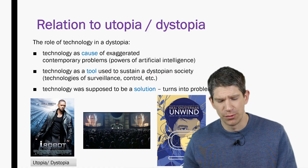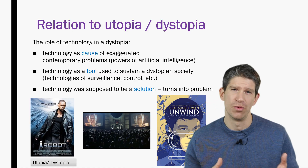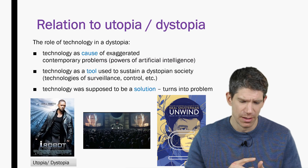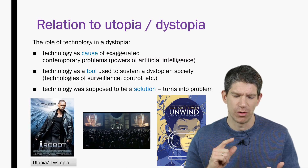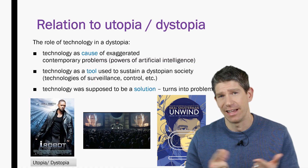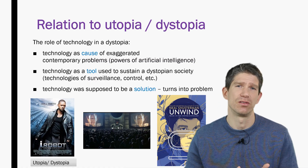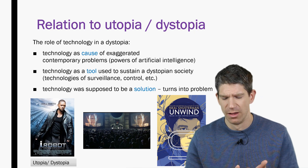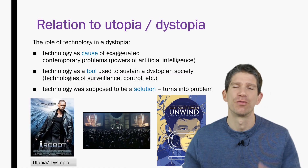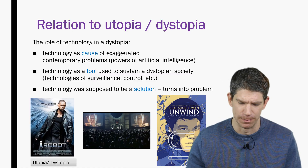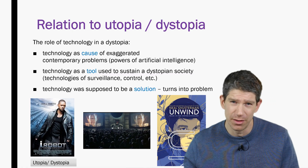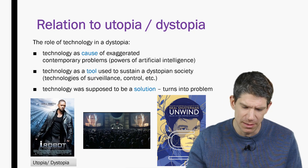This slide shows the role of technology in dystopias. Technology can be the cause of a problem. It can also be a tool that a government uses to stay in control, like in 1984. Or it can look like a solution — for example in Unwind, where it appears to be a solution to health problems but ends up being a dystopia still. That's what I want to highlight about the relation to the utopia and dystopia topic.